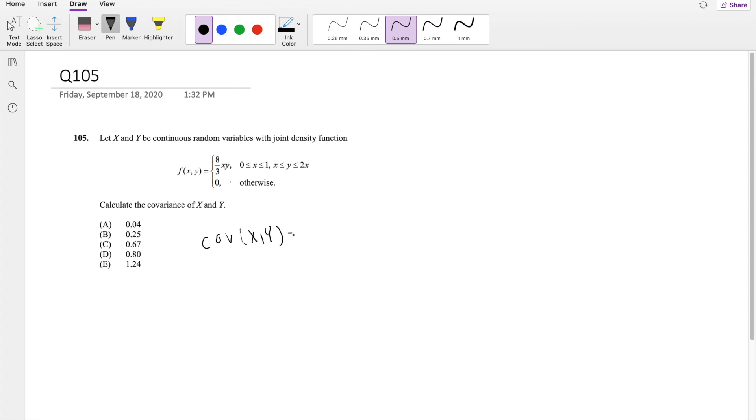The covariance of x and y is equal to the expected value of xy minus the expected value of x times the expected value of y. Okay, so let's just find the expected value of xy first. So this is actually just equal to xy times our probability function, that's 8 thirds, so x squared y squared.